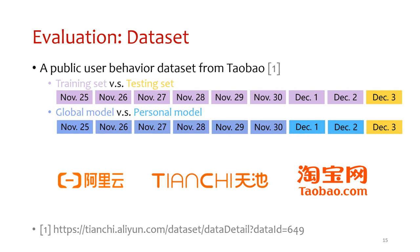To evaluate the performance of DeepBReath and baselines, we used a public user behavior dataset from Taobao, which contains nearly 1 million users and nearly 100 million behaviors from November 25 to December 3, 2017. To simulate the GDPR scenario, we manually set a GDPR deadline at 0 o'clock on December 1, after which click data can only be used to fine-tune a personal module on devices. We set a training deadline at 0 o'clock on December 3, after which click data can only be used for testing.